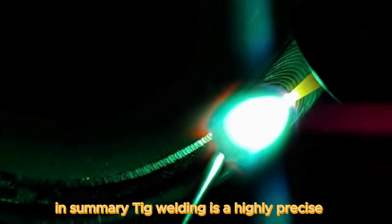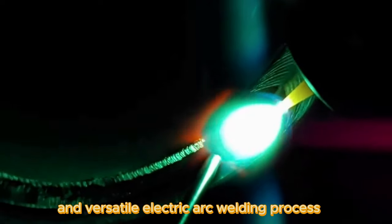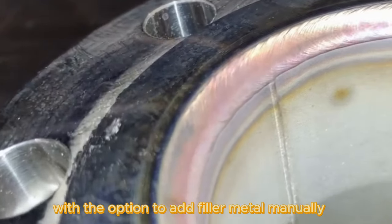In summary, TIG welding is a highly precise and versatile electric arc welding process. It employs a non-consumable tungsten electrode, with the option to add filler metal manually as needed.